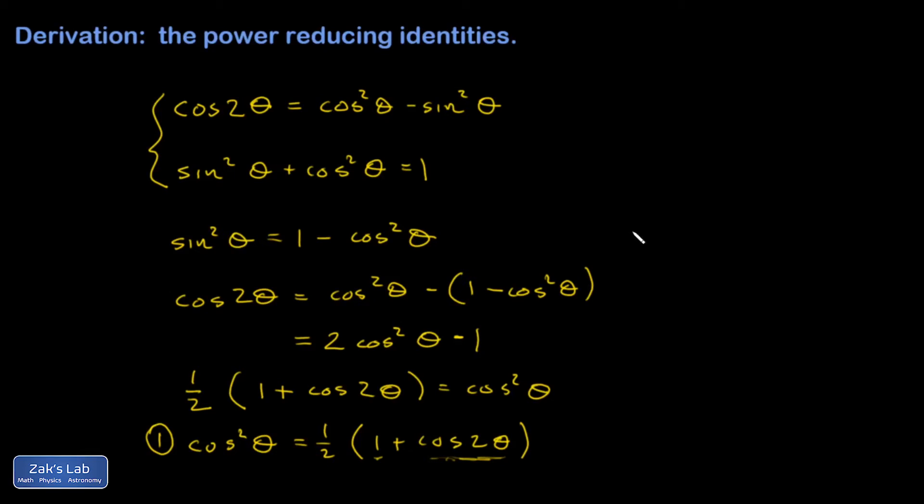Let's go the other way. Cosine squared θ is one minus sine squared θ. Go up here and replace cosine squared. I get cosine 2θ is one minus sine squared θ minus sine squared θ.